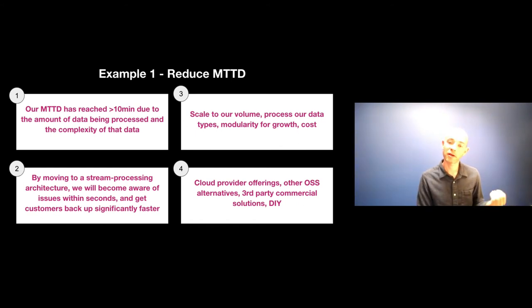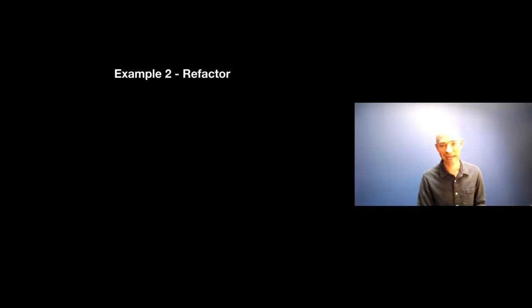Well, we need to scale to our volume and probably our growth volume. We have to be able to process our data types and we need to be able to handle modularity in case we bring in new data types or new applications that need to send to us. And of course, let's do it at cost. And finally, what else was chosen or what else was considered? Well, what were the other options that we could have used other than say like an open source tool like Flink or some other data processing? We could have looked at cloud provider offerings because everybody's got something out there. We could have looked at other open source solutions, could see third party commercial solutions, or we could do something DIY, build it yourselves.